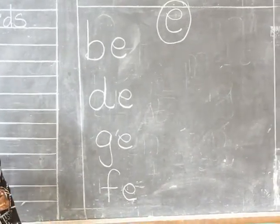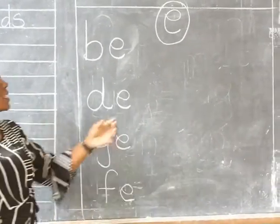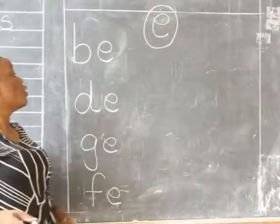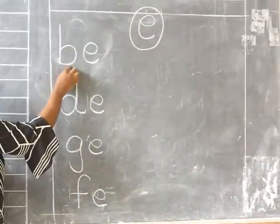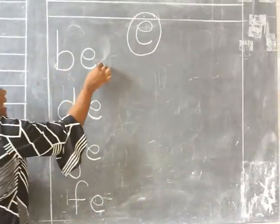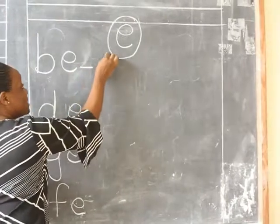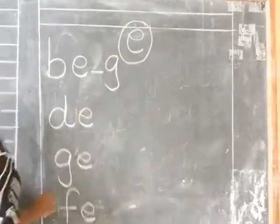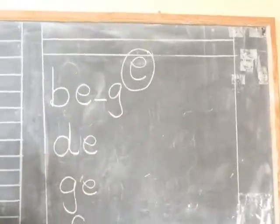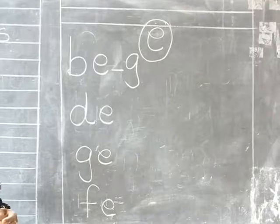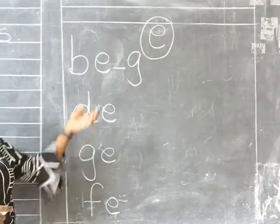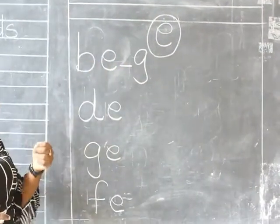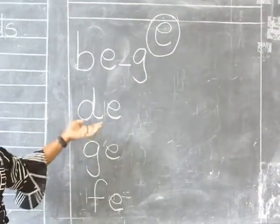Now you're going to make three-letter words using vowel a. When you have syllable ba, then you add some gu, you're going to have a three-letter word.